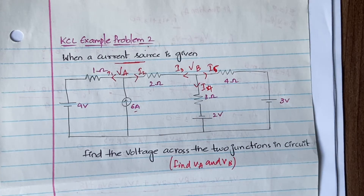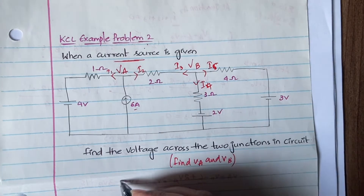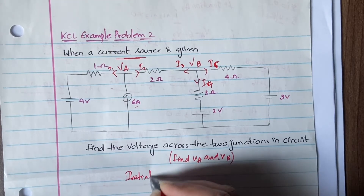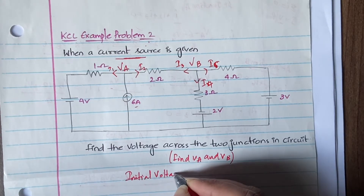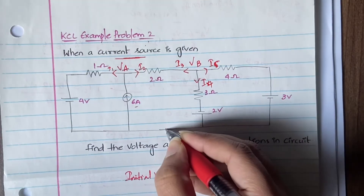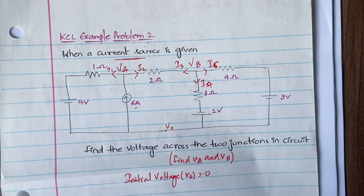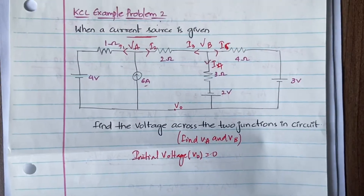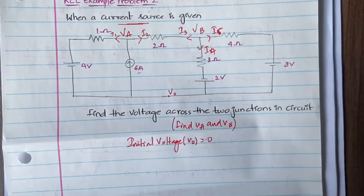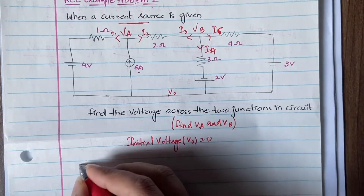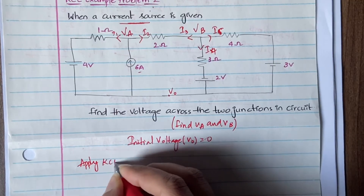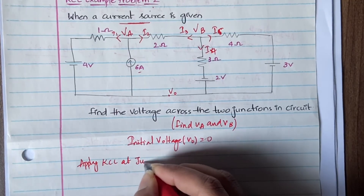Now we also take the initial voltage V0 equal to zero. With that, we can go ahead and apply KCL at both junction A and junction B.